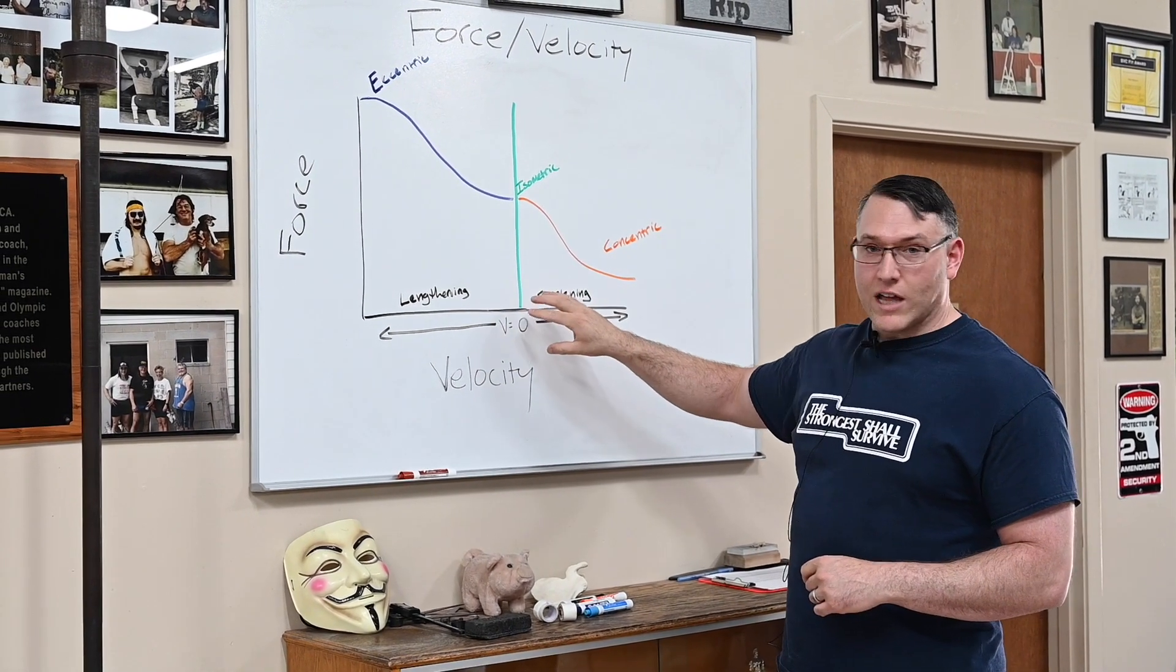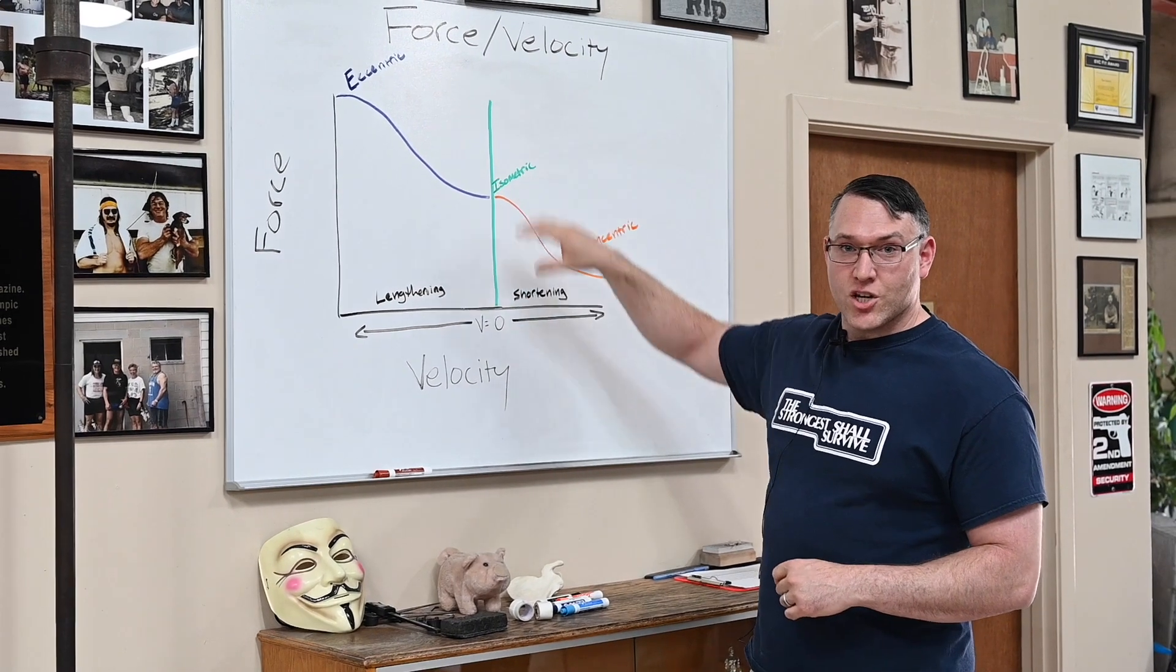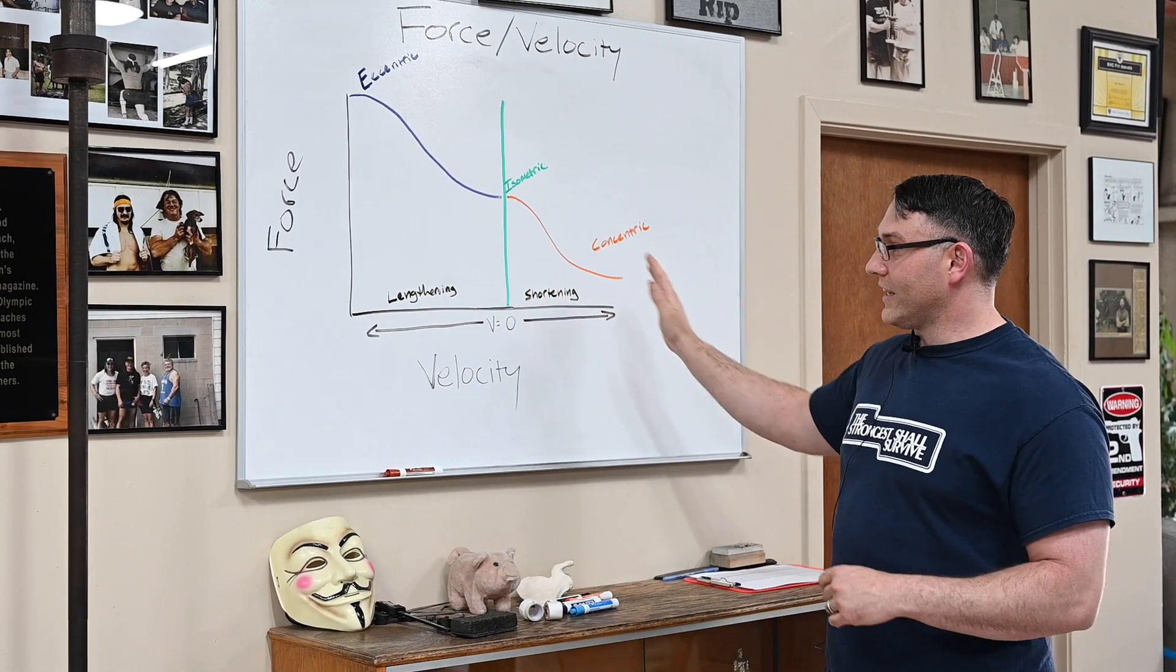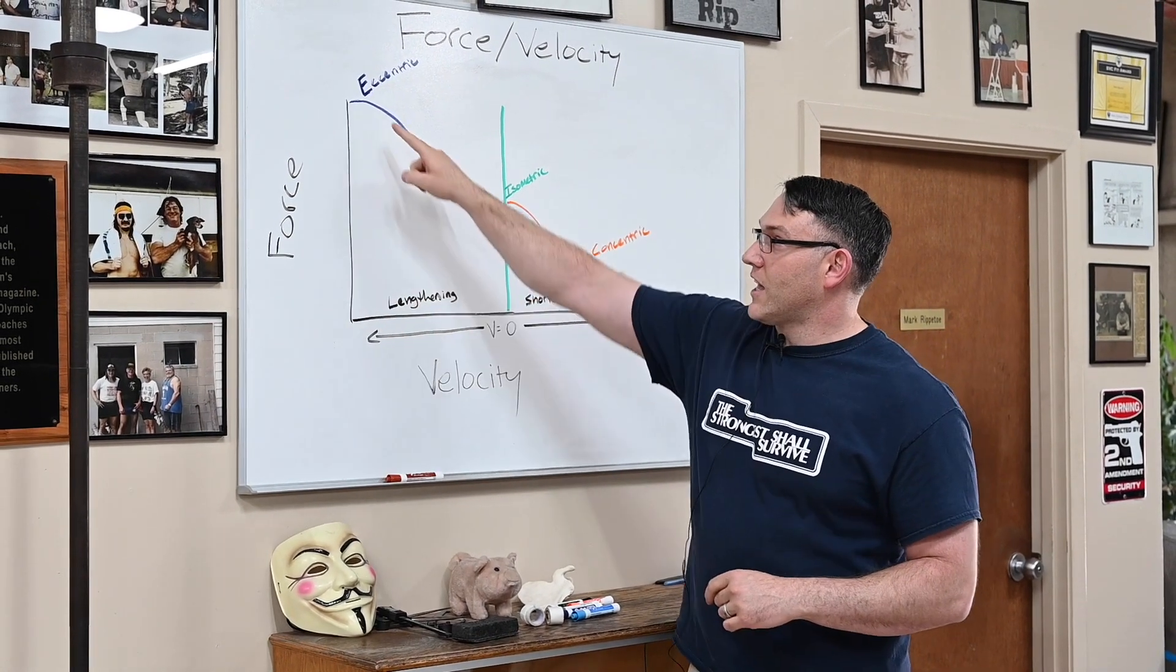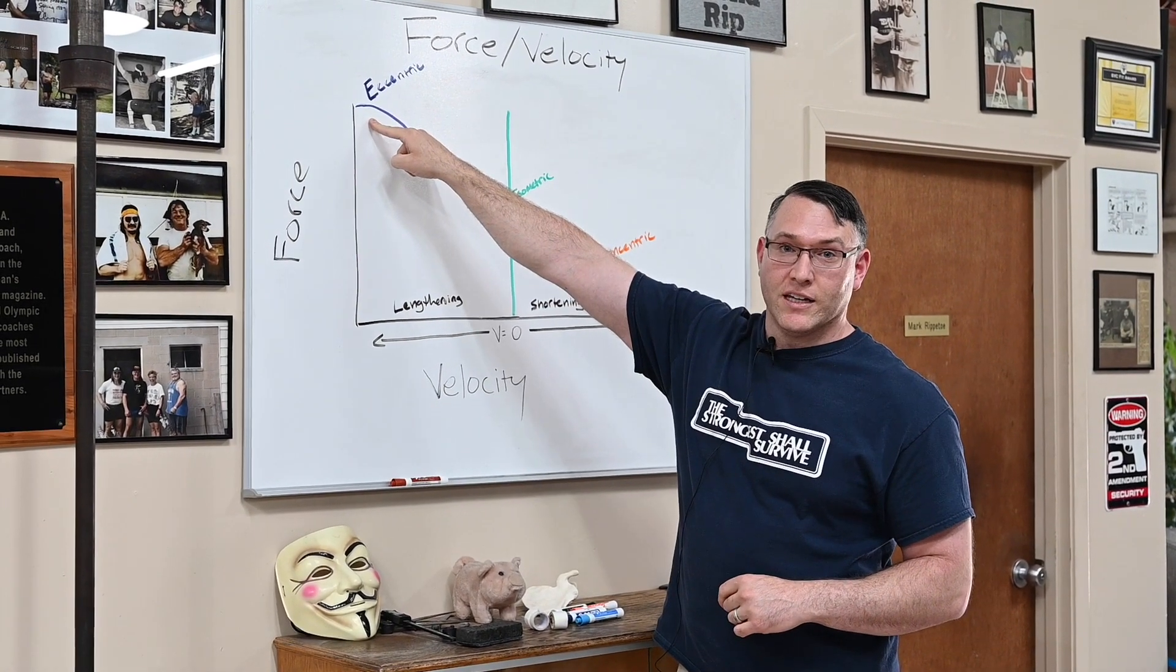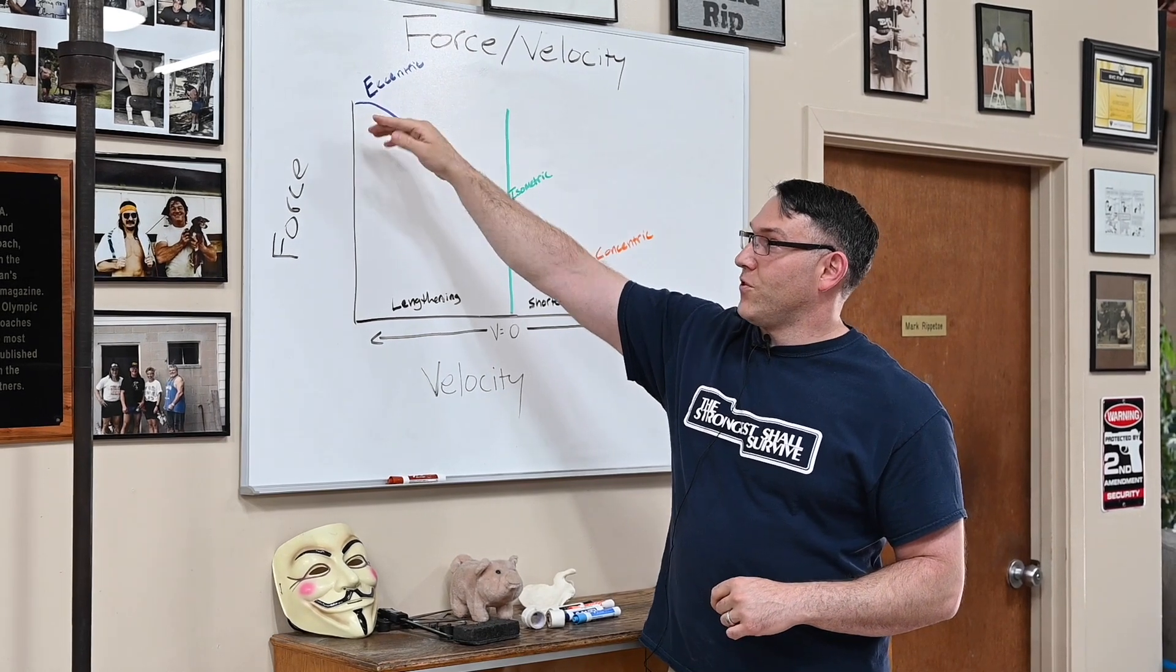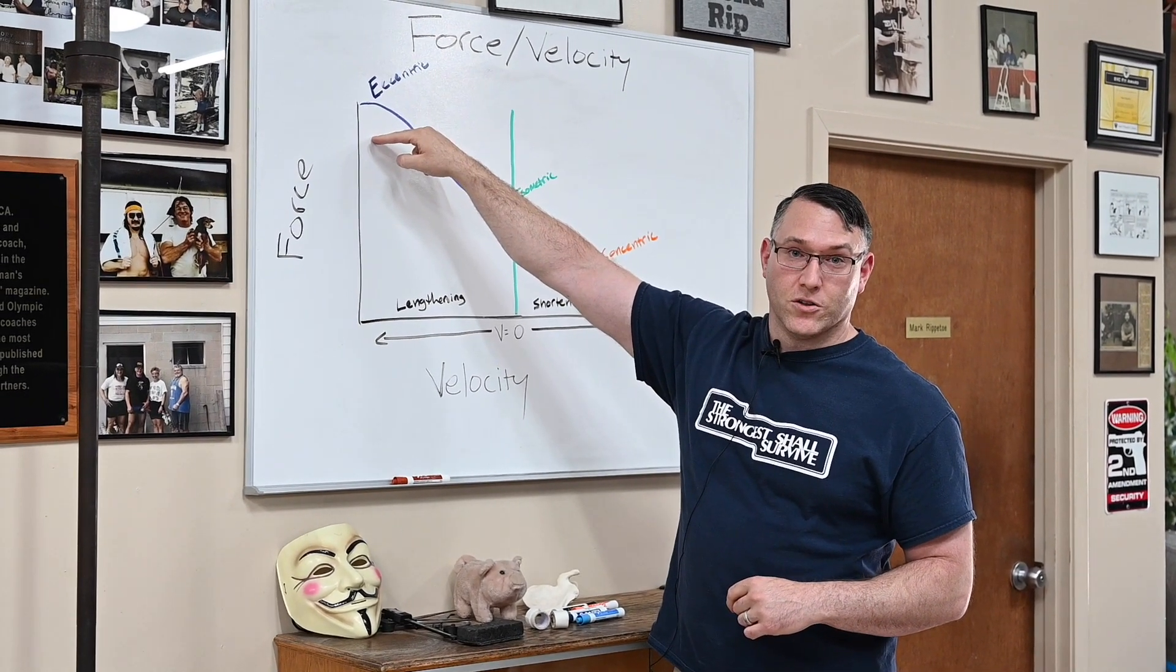represents zero velocity. As we move further away in each direction, velocity is increasing. What we see with increasing velocities when we're working eccentrically is that we have the greatest amount of force production potential.